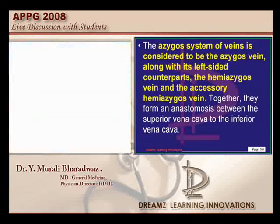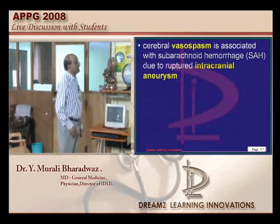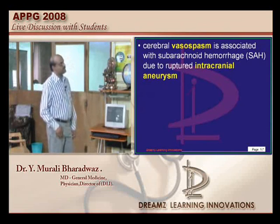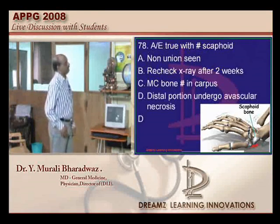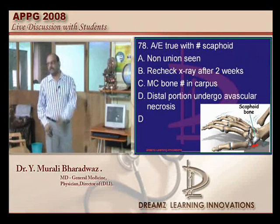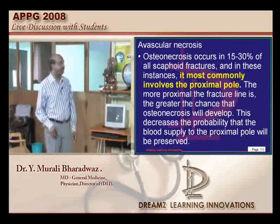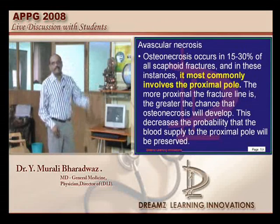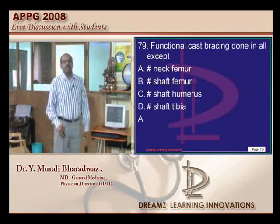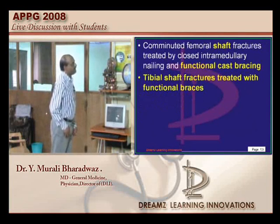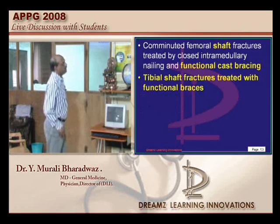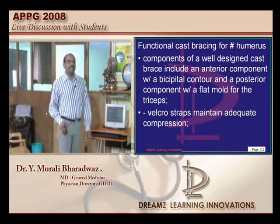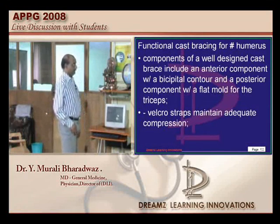When a brain aneurysm ruptures, it can lead to vasospasm, intracranial hemorrhage, and subarachnoid hemorrhage as complications. In scaphoid fracture, it is the proximal pole which is more likely to undergo avascular necrosis. Functional cast bracing is used for comminuted femoral shaft fracture, fracture of the humerus, and fracture of the tibia — but not fracture neck of femur.